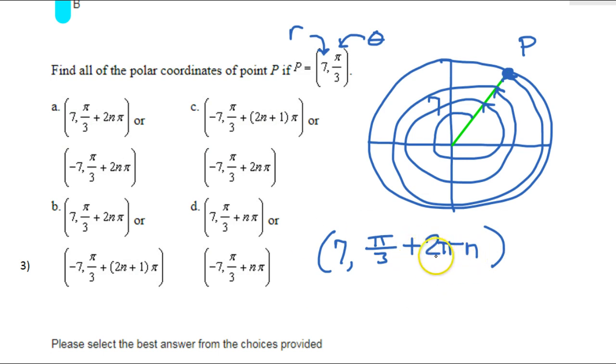So if N is 1, then I went around 2 pi extra. If N is 2, then that's 4 pi extra. So that's why the N is there because I could just keep doing this all day. So this represents infinitely many names of the same point because of the N. I've got infinitely many names. So first of all, let's look for answers that involve this expression.